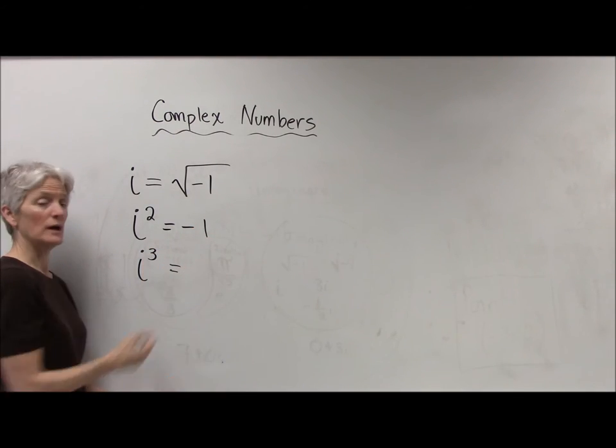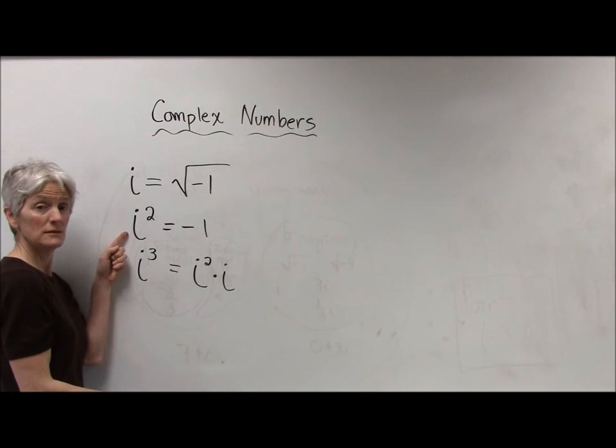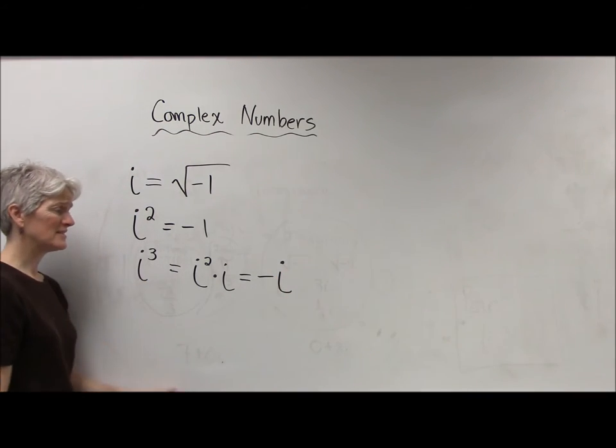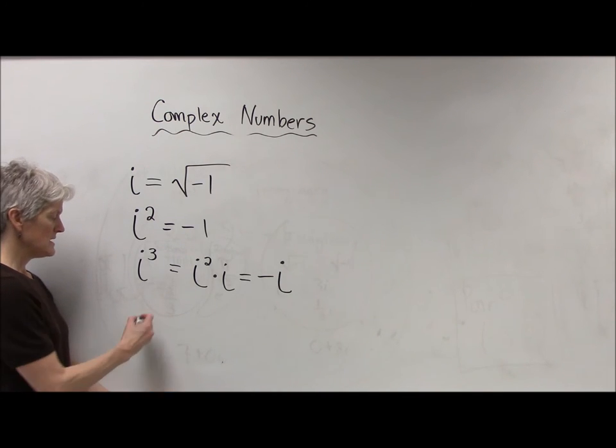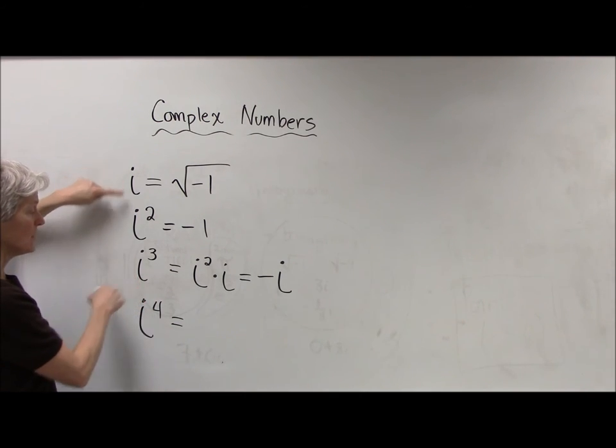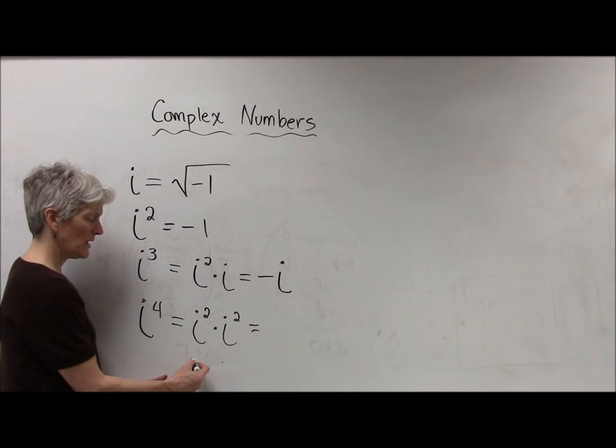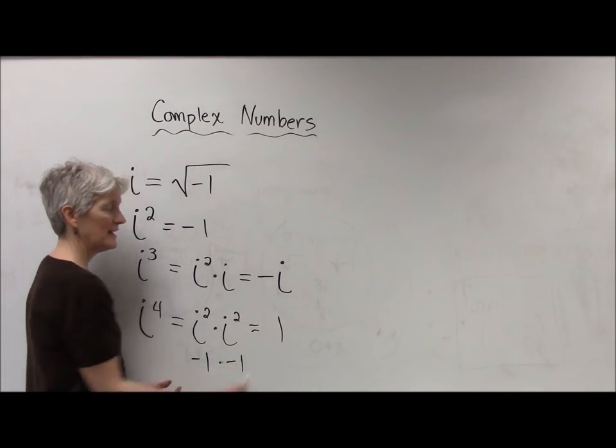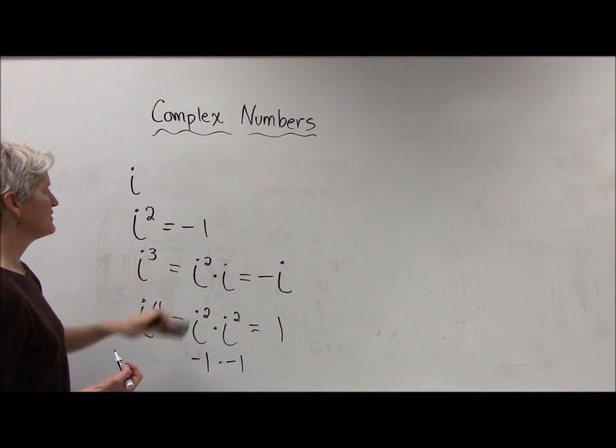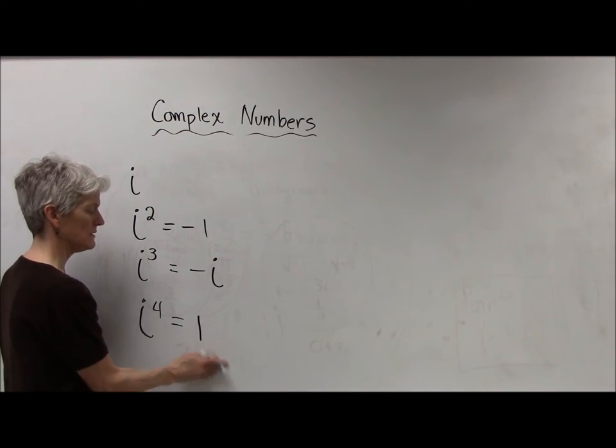What's i cubed going to equal? Well, I'm pretty sure i cubed I can think of as i squared times i. If i squared is negative one, then I can think of i cubed as being the same as negative i. How about i to the fourth? Well, I could express i to the fourth as either i to the third times i, or as i squared times i squared. Either one will leave me in the same place. i squared times i squared. Well, i squared is negative one. Another i squared is negative one. That equals positive one. So I have this interesting kind of setup here. I have i. I have i squared as negative one. I have i cubed as negative i. And i to the fourth is equal to one.